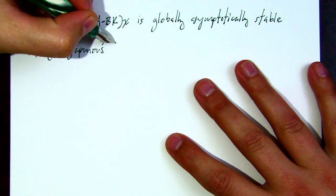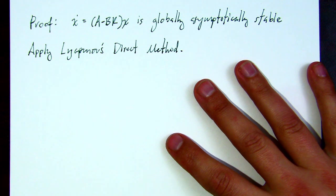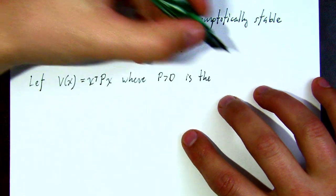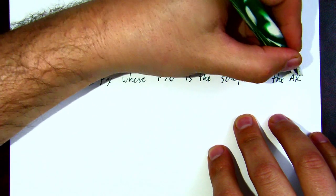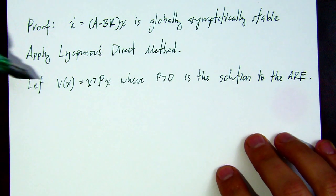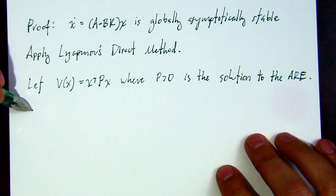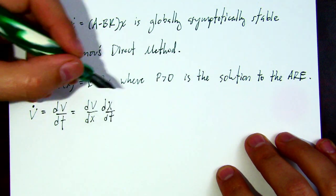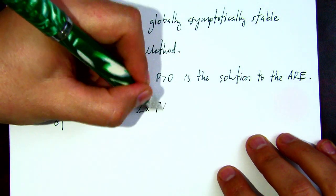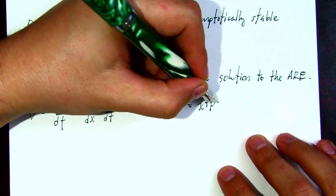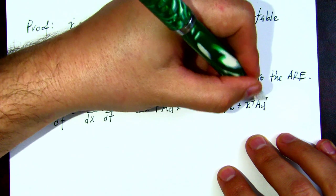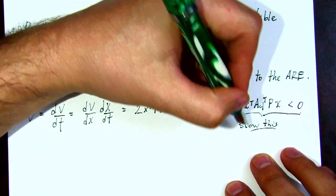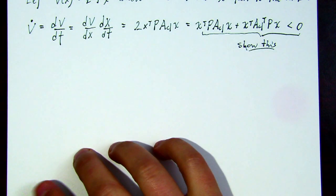Let's show that's true. We'll apply Lyapunov's direct method using the candidate Lyapunov function V = x^T P x, where P is the solution to the algebraic Riccati equation. We assume we have a positive definite P, then take the time derivative along the trajectories of the closed-loop system. We get 2x^T P as dV/dx and substitute in f(x) = A_{cl} x. Using the fact that it's a scalar, we can break it into two terms. We then need to show their sum is negative definite everywhere.